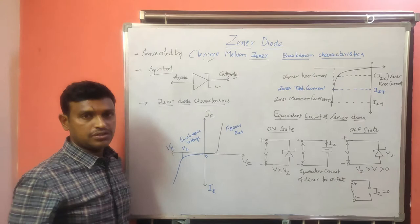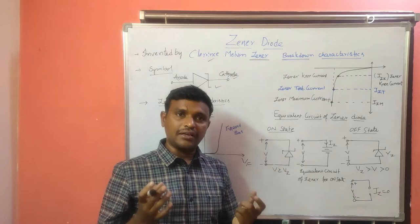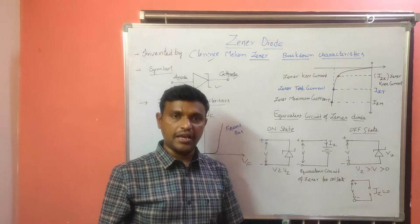We can construct the GINA diode like a normal PN junction diode, but the doping concentration is very high. And because of that, the depletion region will be very less.